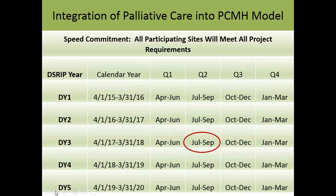What you see here is the speed commitment that has been made. Those of you who've been involved from the beginning will remember the term speed and scale. Speed commitments are the date by which all participating sites will meet all project requirements. We've committed to meeting all the requirements for this project by DSRIP Year 3, Quarter 2 — which is end of September 2017.